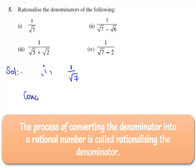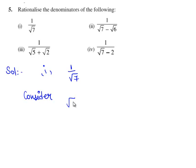So consider root 7. Let us multiply root 7 with root 7 itself. So we have root 7 times root 7 is equal to square root of 7 times 7, which is square root of 49 that is 7.